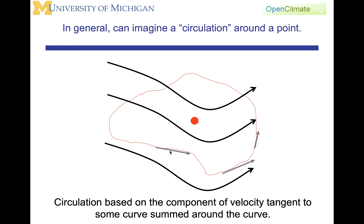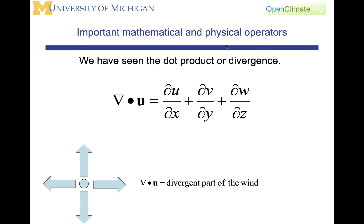An important concept to be aware of — though we do not use it very much in this course — is a concept called the circulation. Circulation is based on the idea of the tangential velocity component summed all the way around a curve. This gives you some idea of the circulation around the point. We're doing science, and hence we want to quantify these ideas, so there is a mathematical relationship.